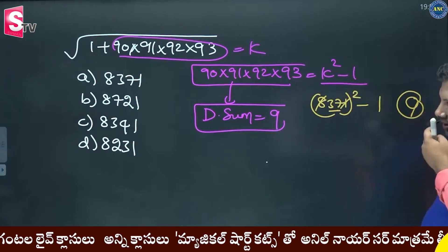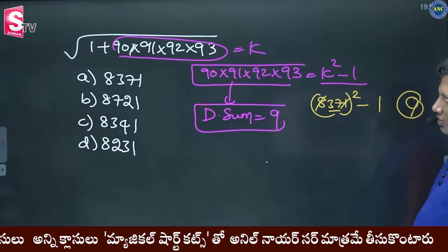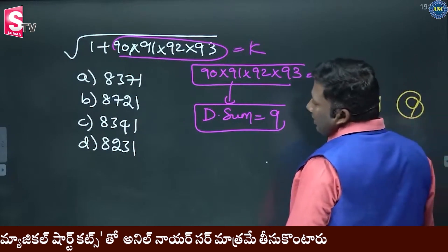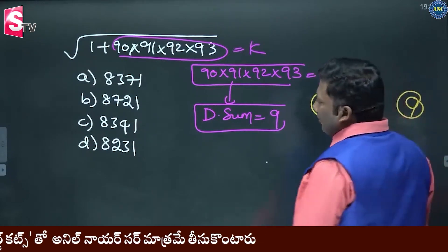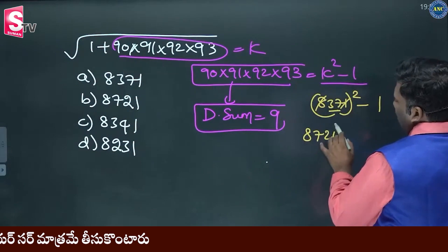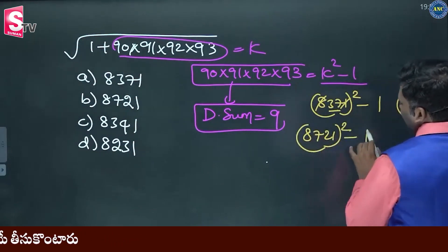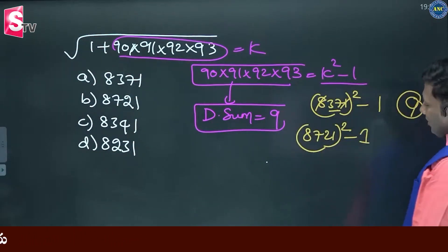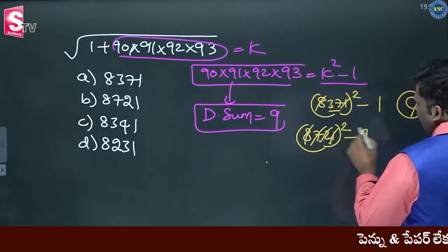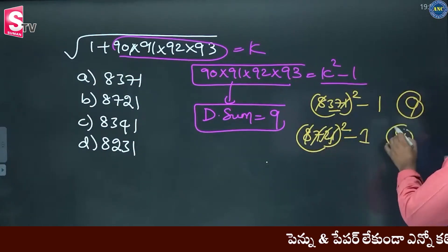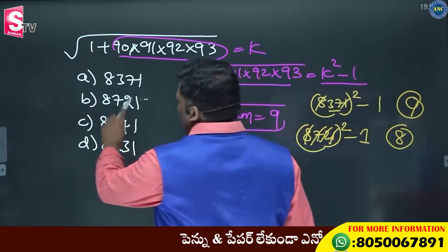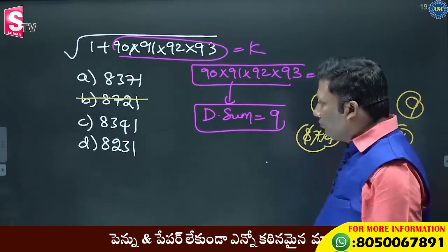Are you all with me? First one done. Second one now: 8721. 8721 squared minus 1 — we need digital sum 9. But 9 minus 1 is 8. We need digital sum 9. It is not valid.